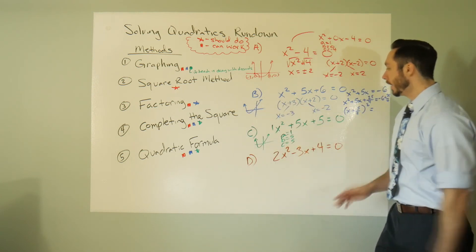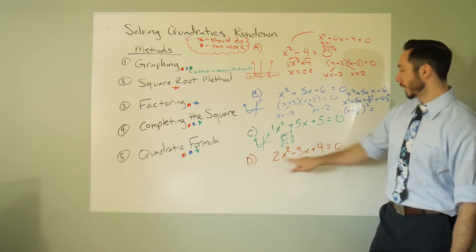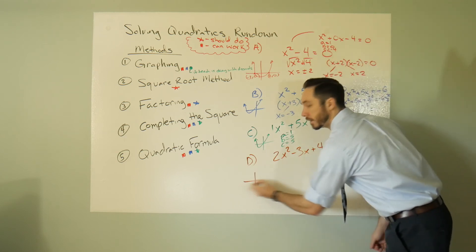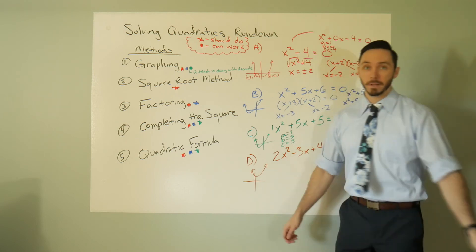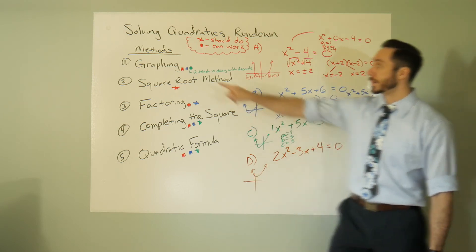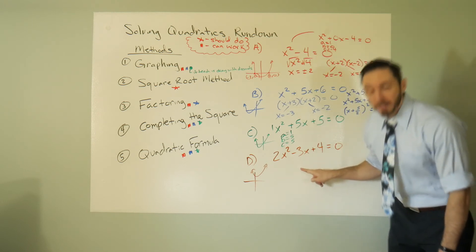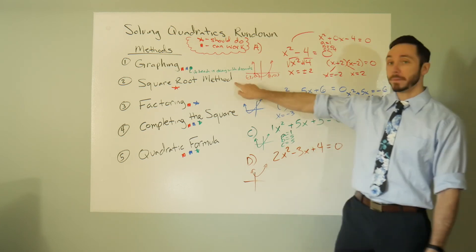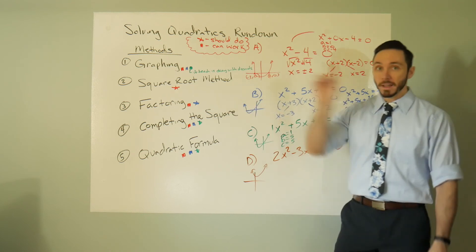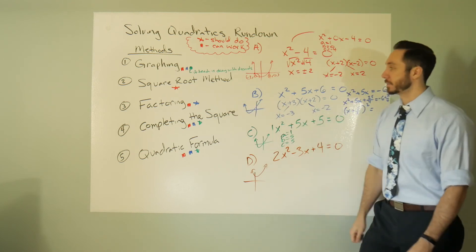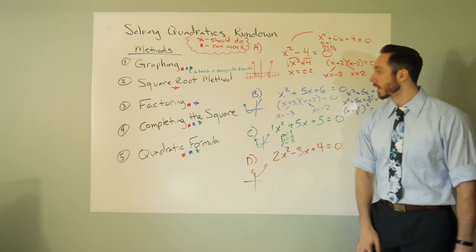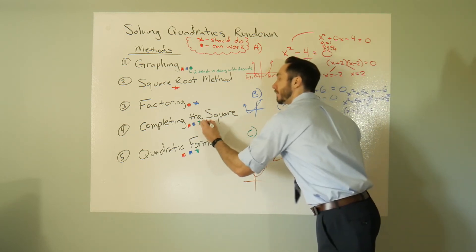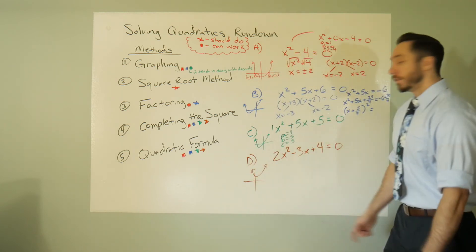For 2x² - 3x + 4: if you try to graph this you get a parabola that doesn't touch the x-axis, meaning there are no real solutions — only imaginary. So graphing will not work. Square root method won't work because there's a linear term. Factoring won't work because it's not factorable. Completing the square and quadratic formula both work, but you'll be dealing with imaginary numbers.